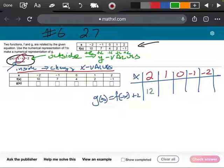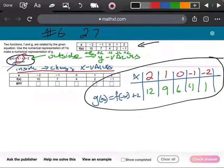So, 10 plus 2 would give me 12. 7 plus 2 would give me 9. 4 plus 2 would give me 6. 2 plus 2 would give me 4. And negative 1 plus 2 would give me 1. So, this right here is what my table is going to look like.